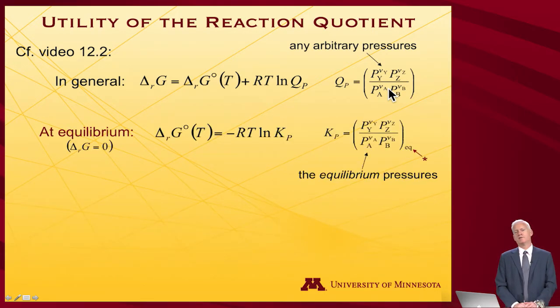What we know is that at equilibrium, if we measure those pressures, so here's the little asterisk to emphasize, we wait till the system comes to equilibrium. There will be particular pressures we can measure. Now we define that unique reaction quotient measured at equilibrium as the equilibrium constant.